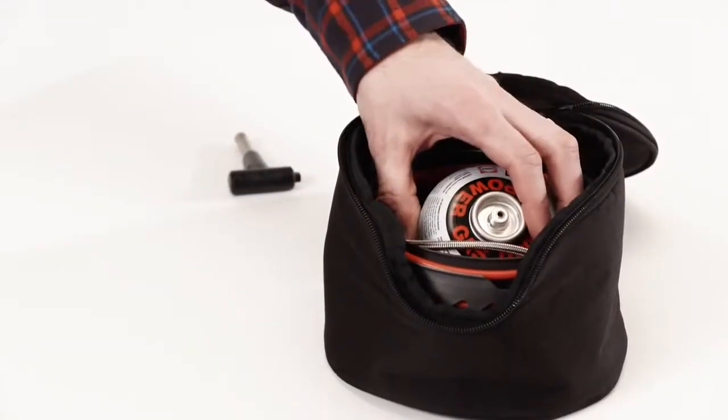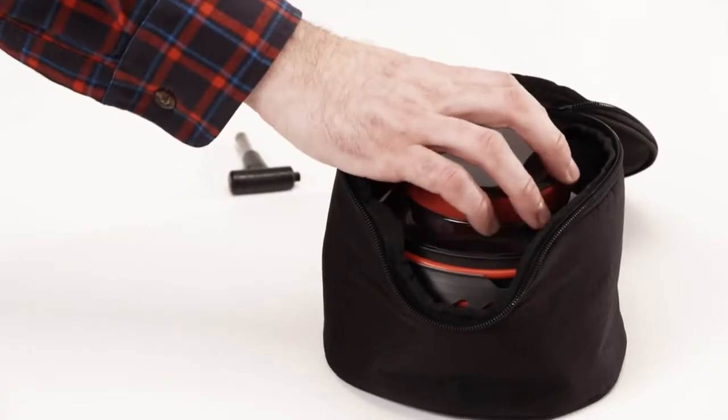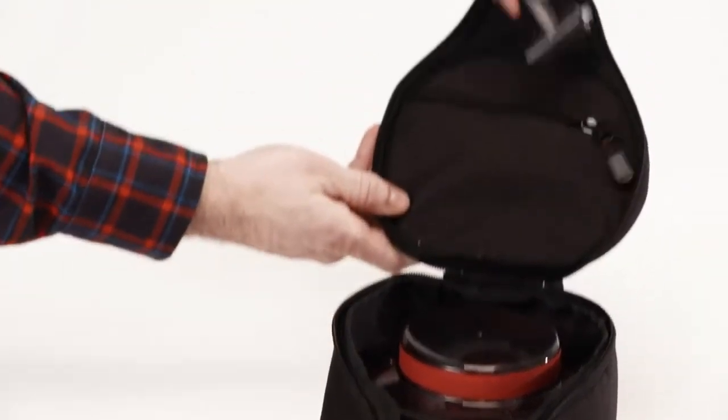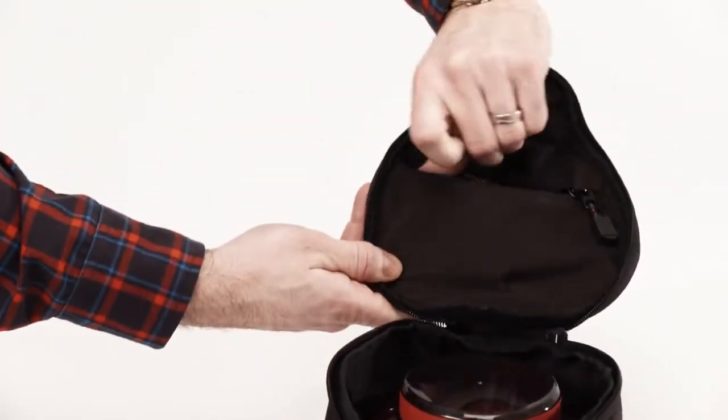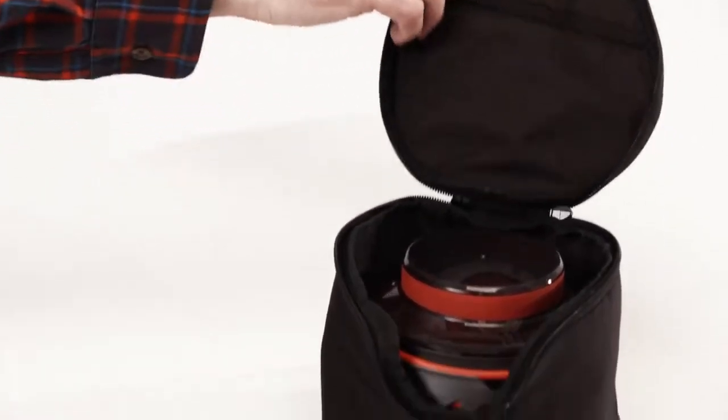The burner, pots, windscreen, bowl and a 100g LP gas canister simply pack together into one compact unit in the insulation bag.